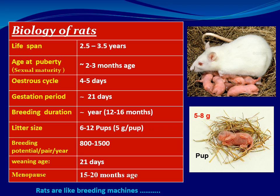Some biological features of rats: life span is about 2.5 to 3.5 years; age of sexual maturity is reached at 2 to 3 months, up to 4 months; estrous cycle is 4 to 5 days; gestation period is about 21 days; breeding duration about a year; number of pups per litter about 6 to 12, each weighing 5 to 8 grams; and breeding potential is about 800 to 1500 offspring per year.